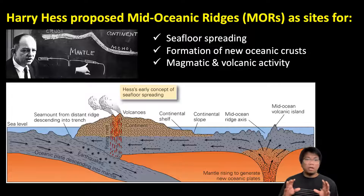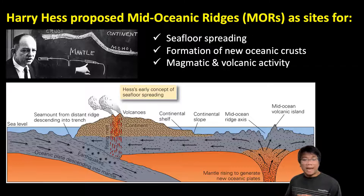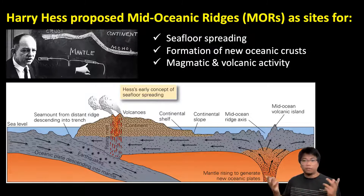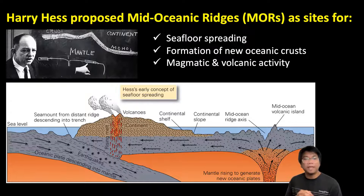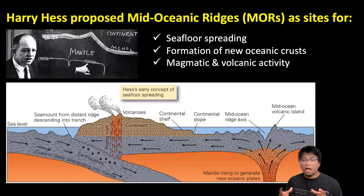Based on all of those observations, another scientist in the 1960s compiled this data and proposed an interpretation: that Mid-Ocean Ridges are sites for several things. First, they are sites for seafloor spreading — meaning this is where the seafloor is spreading apart and moving away from each other. Second, they are sites for the formation of new oceanic crust. And last but not least, they are sites where we would find active magmatic or volcanic activity.